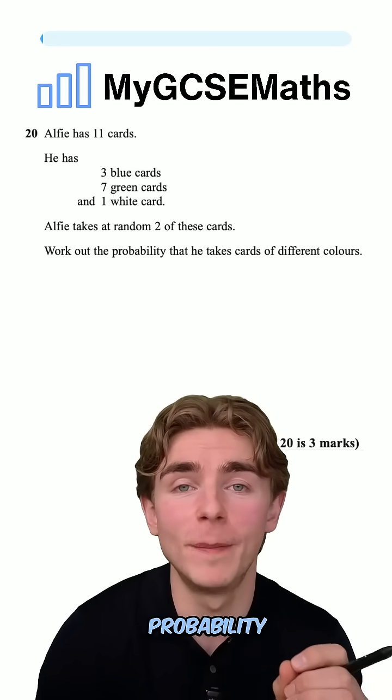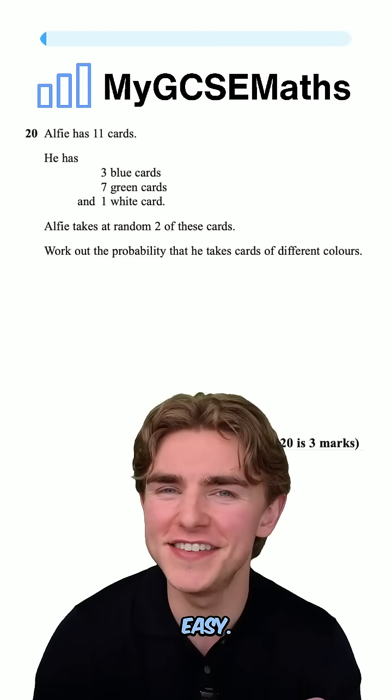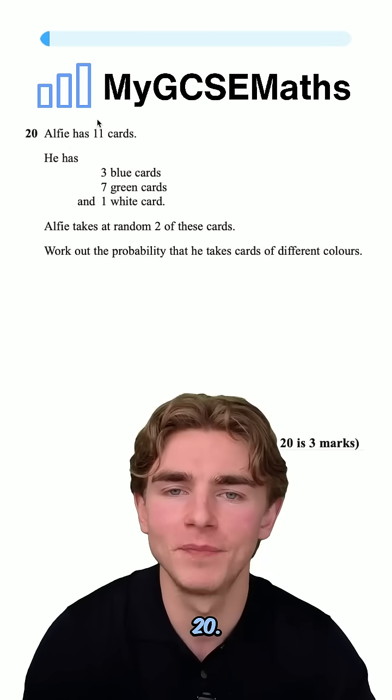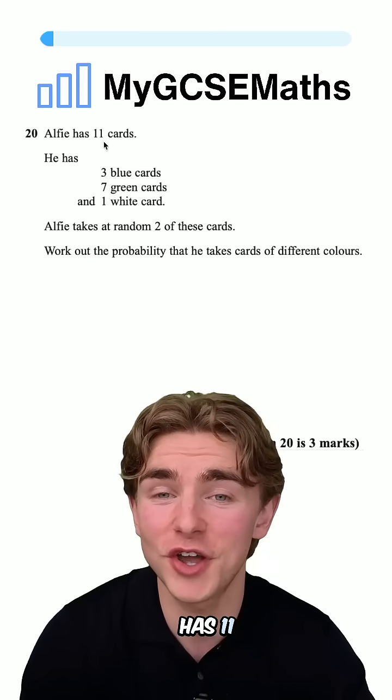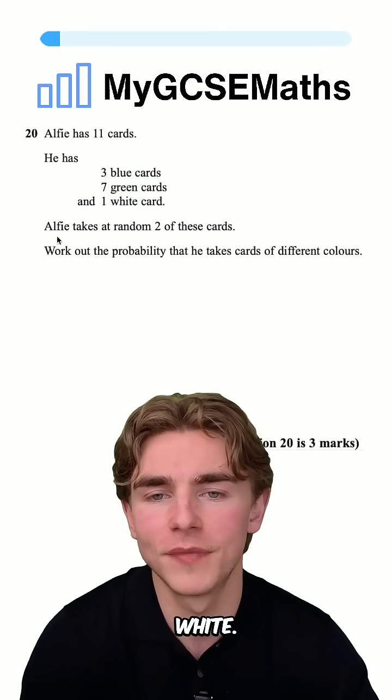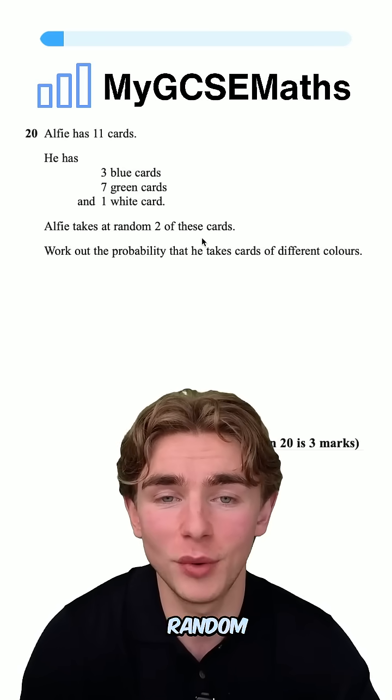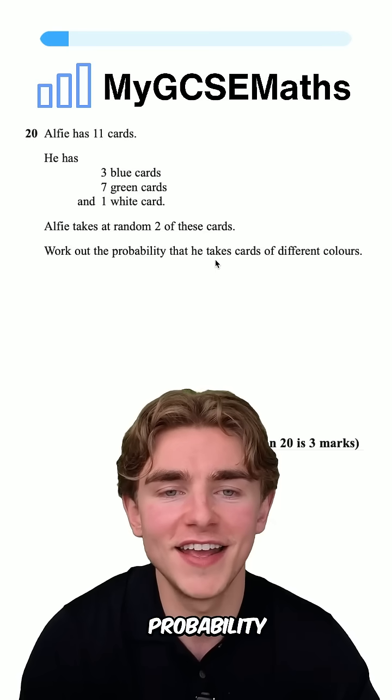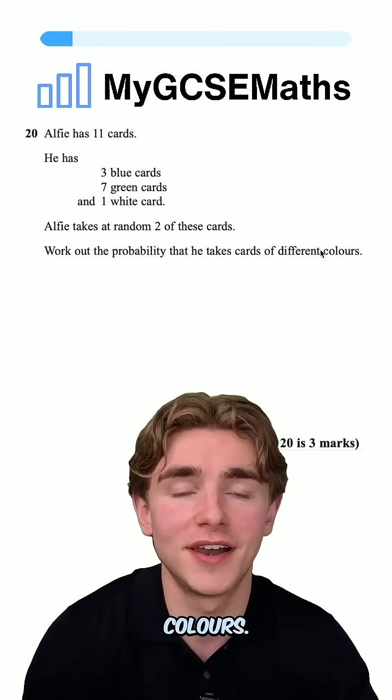This is a pretty classic probability question. It's not easy. Let's have a look at Question 20. Alfie has 11 cards: three blue cards, seven green, and one white. Alfie takes at random two of these cards. We're asked to work out the probability that he takes cards of different colors.